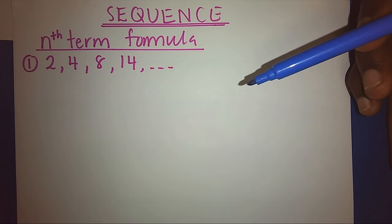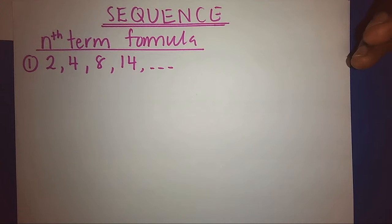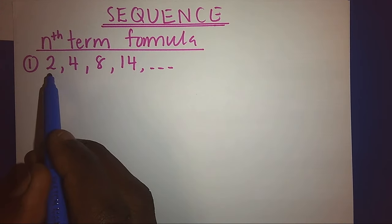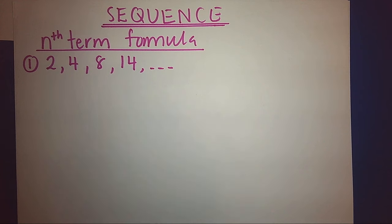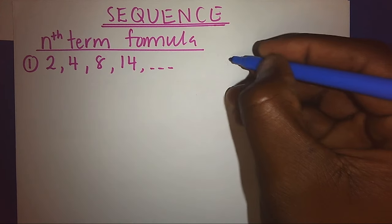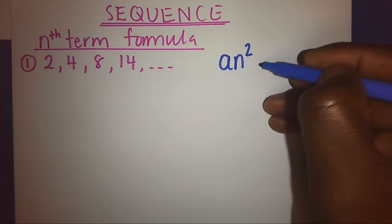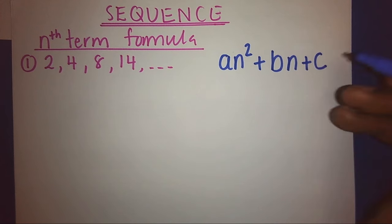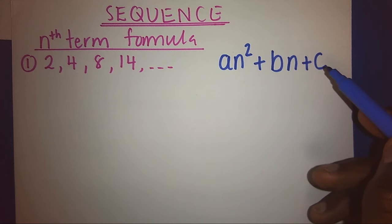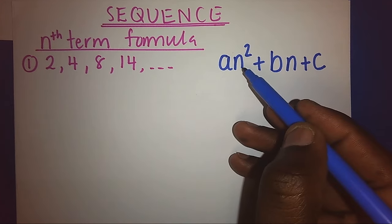We have two examples today to demonstrate how we can generate the nth term formula. Our first example, we have a sequence: 2, 4, 8, 16. First and foremost, we use the general formula that is an² + bn + c. This is the general formula that can give me any sequence. Now, n stands for any term in a sequence.